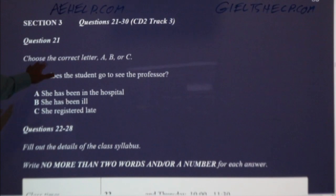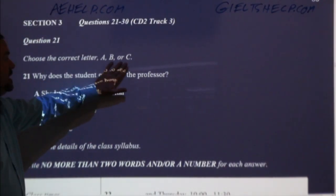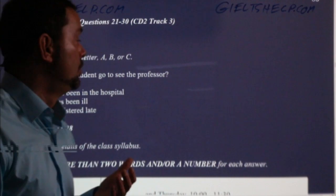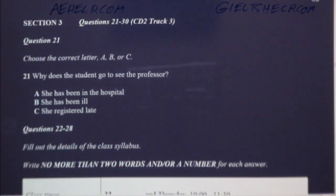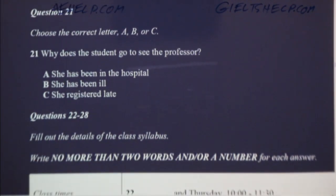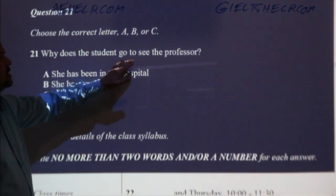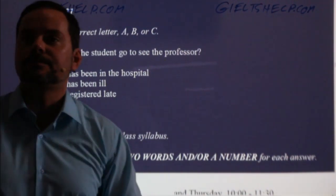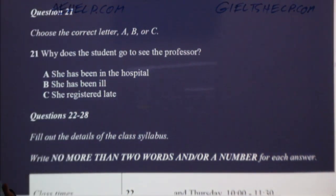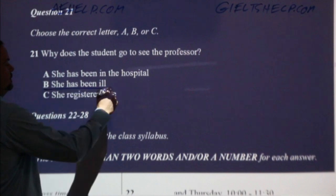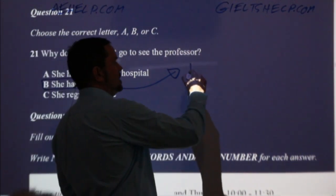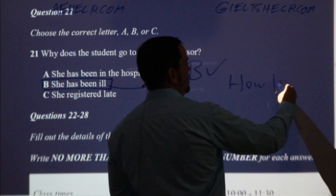So number 21, choose the correct letter A, B, or C. This is multiple choice. When you're doing multiple choice in the listening section, you really have to pay attention to the question — not the answers, but the question. So why does the student go to see the professor? A, she has been in the hospital. B, she has been ill. C, she registered late. She's been ill — B is correct. Bonus question: how long has she been ill? How much of the semester did she miss?